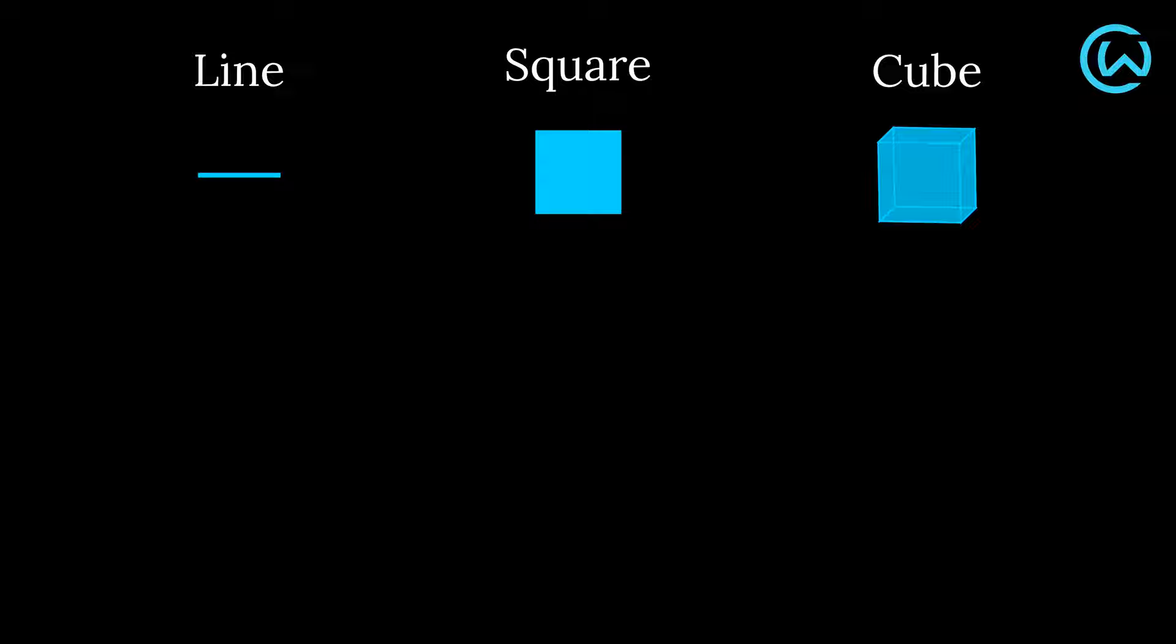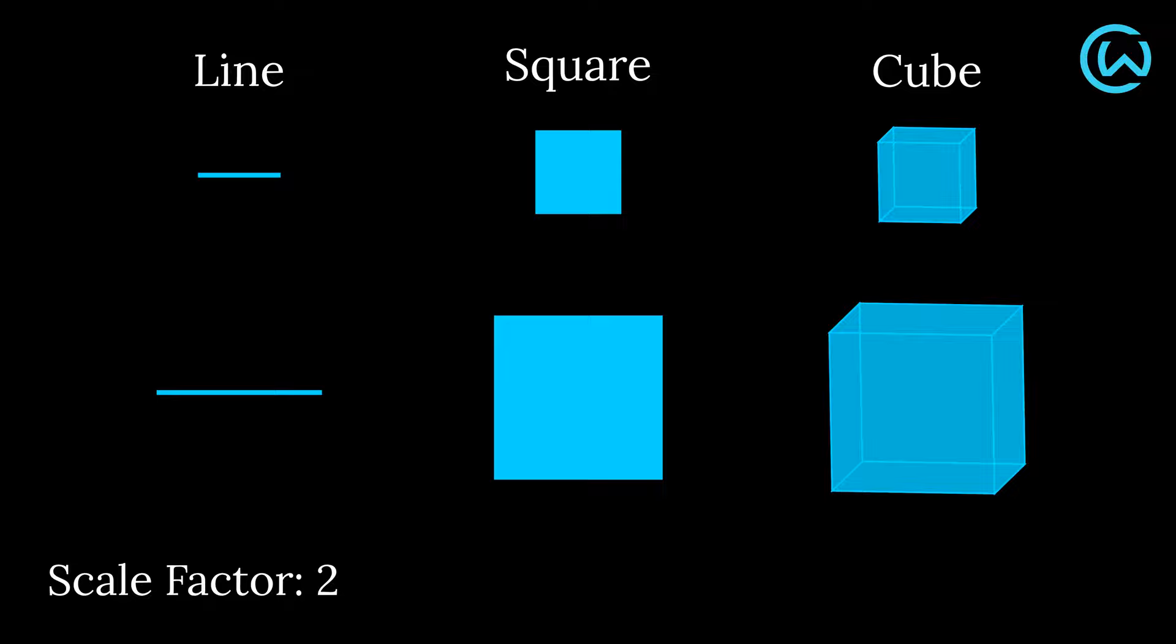A line, a square, and a cube are also self-similar shapes with dimensions 1, 2, and 3, respectively. When scaled by a factor of 2, the length of the line increases two times, the area of the square increases four times, and the volume of the cube increases eight times.